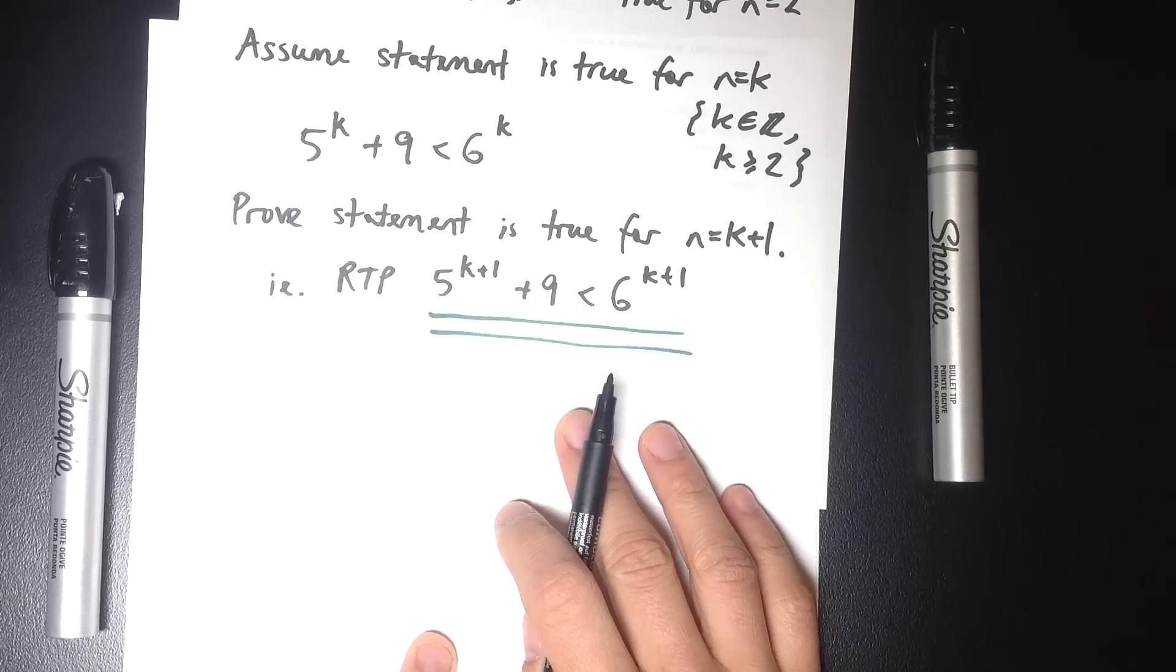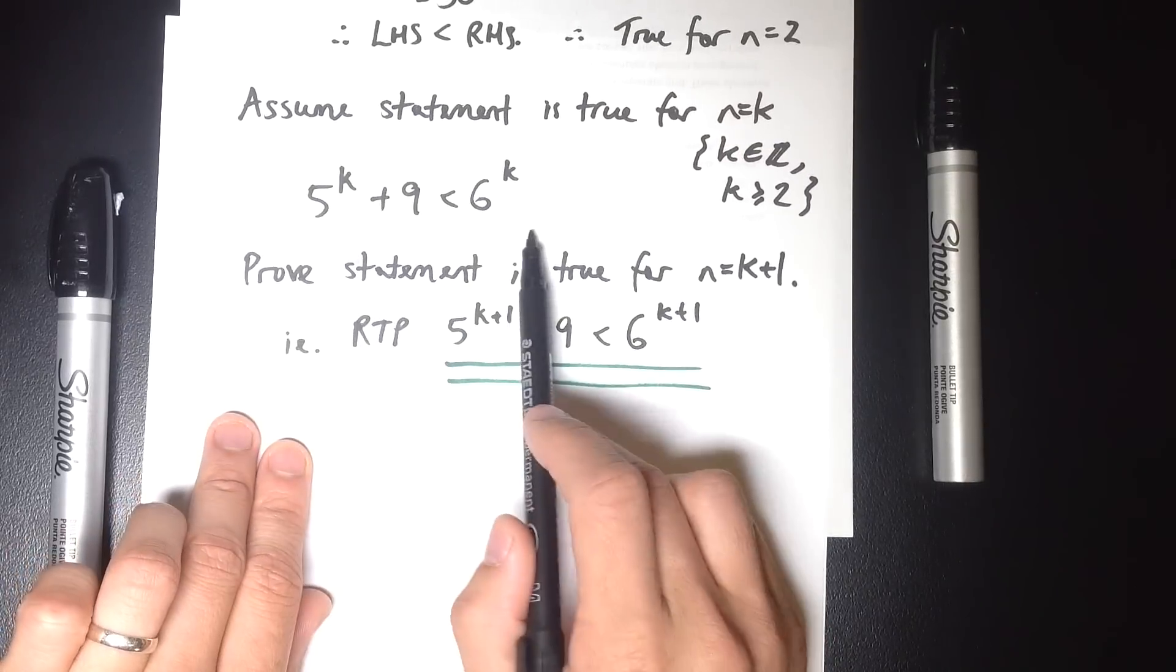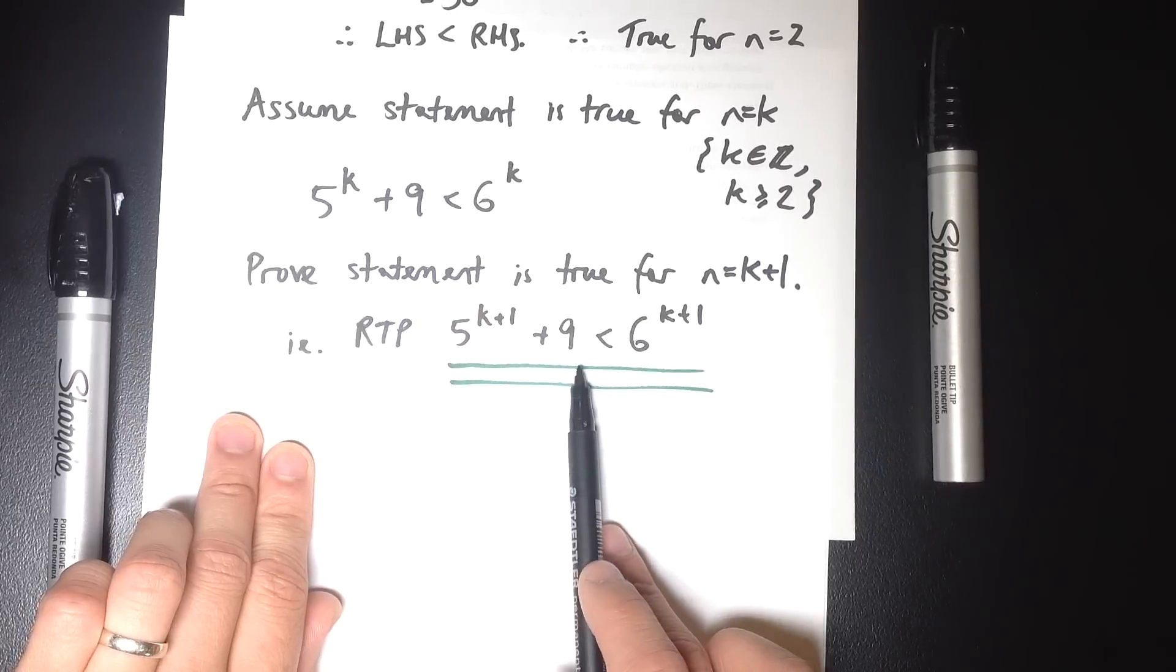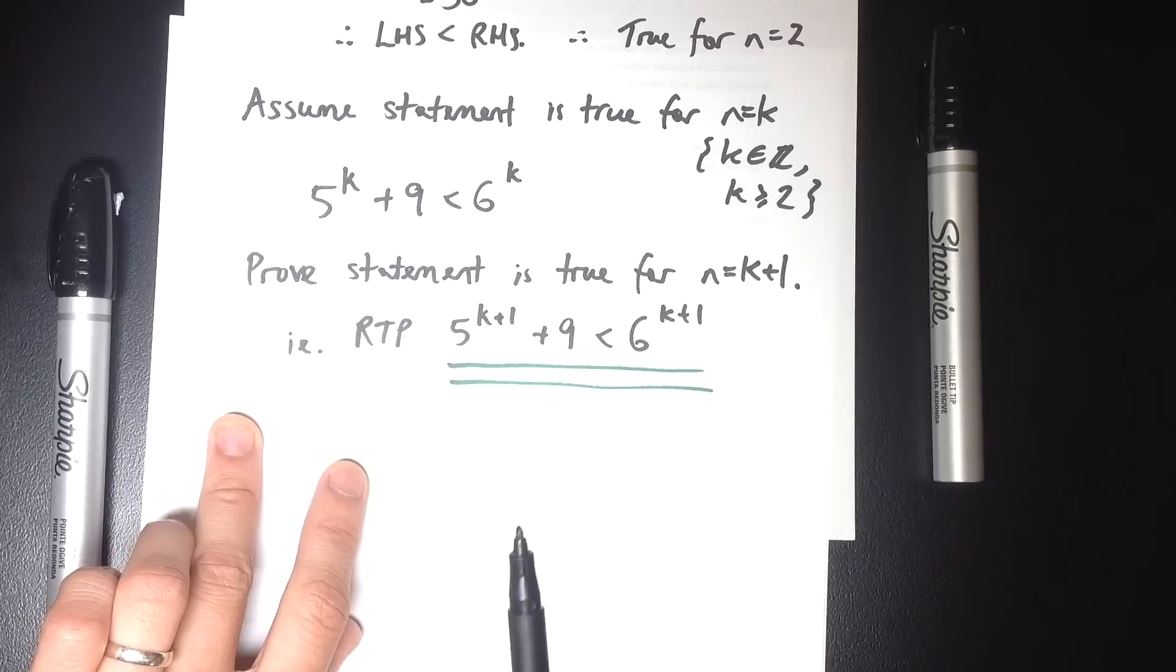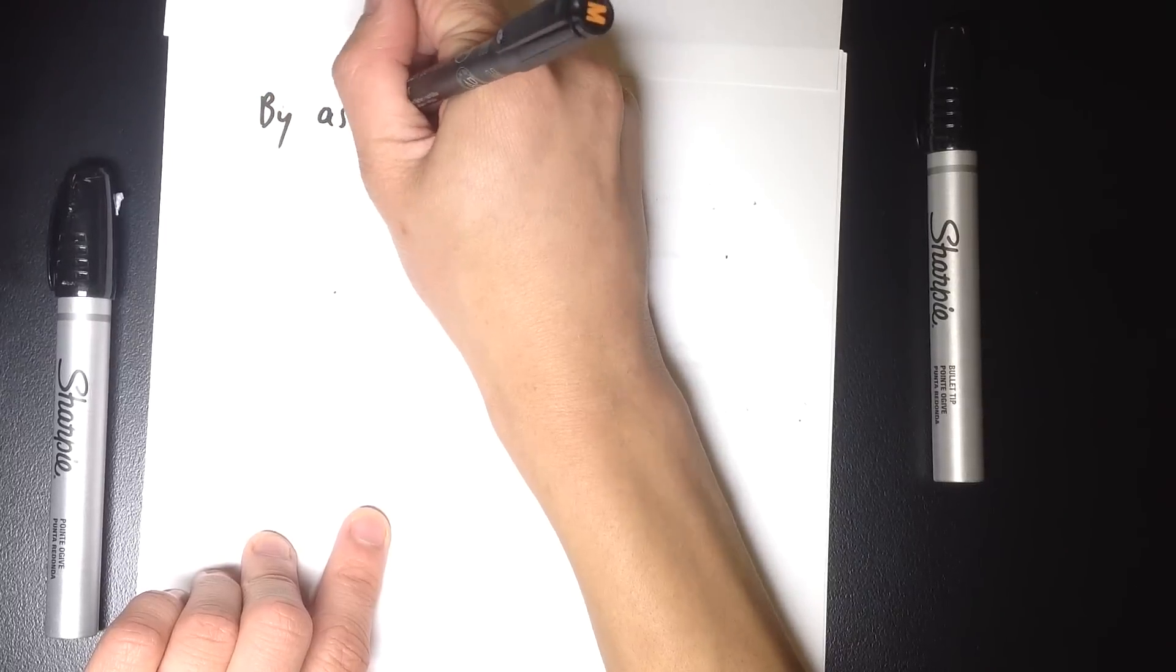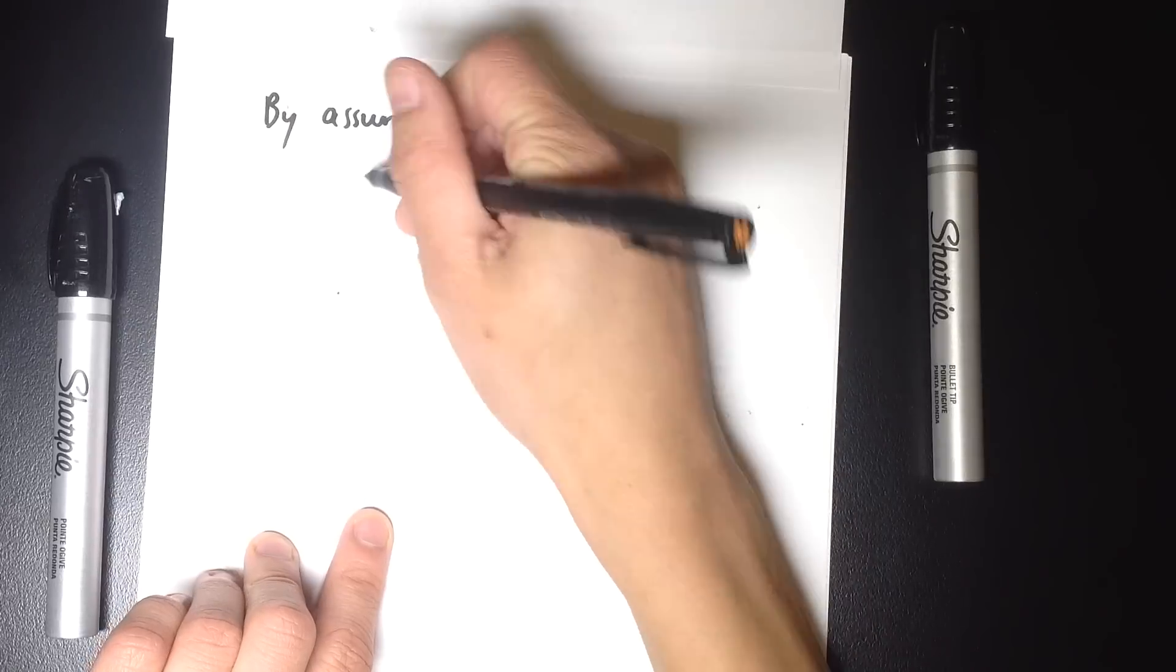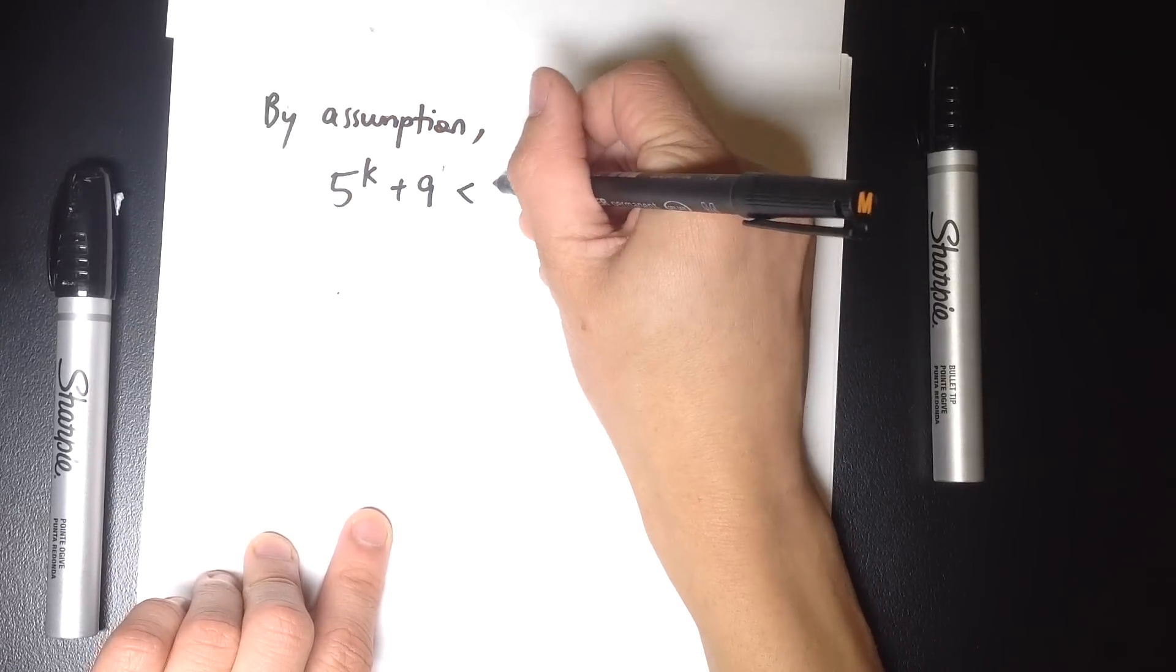Now with inequality proofs, often the easiest place to start is actually with the assumption. And we're going to try and take this and twist and turn it so that we can turn it into something like this or something equivalent to it. And that equivalence is going to be crucial later on. So let's start with this line, the assumption. By assumption, 5 to the k plus 9 is less than 6 to the k.